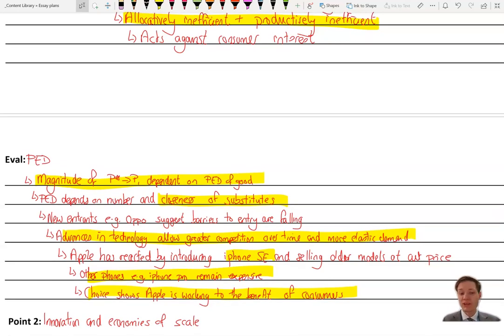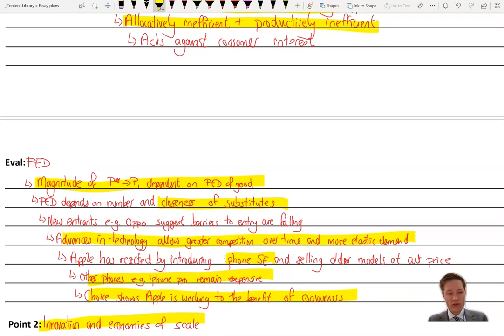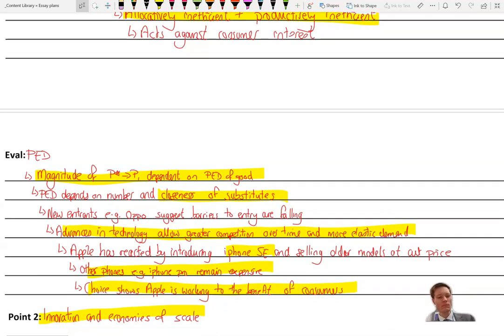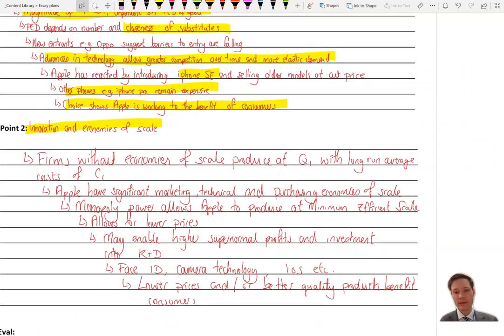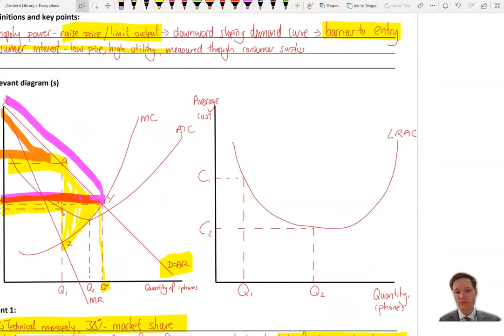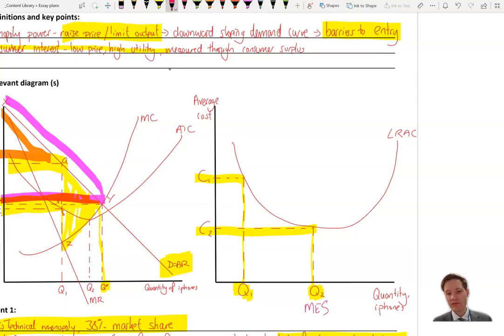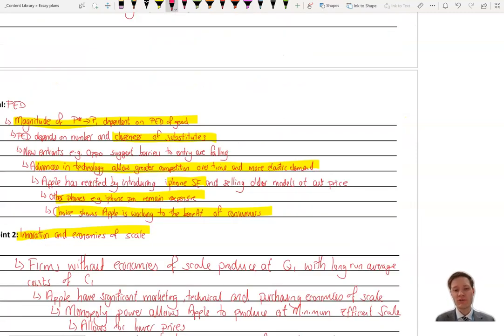Right, our next point, somewhat implied by what I just said there, is innovation and economies of scale. Pause the video. What can you get out of this point? It's always nice for the second point in an essay like this to use an economies of scale diagram. See what you can get from there in real life application from Apple's business. Okay, coming back. So clearly, if we go back to this diagram, we can make a very simple comparison. There are firms without economies of scale. They would have high long-run average costs of C1. Firms such as Apple, who are larger, you might argue, are able to get to their MES. We could say that's the minimum efficient scale. And as a result, they have lower average cost of production, which we might argue is in the benefit of the consumers.